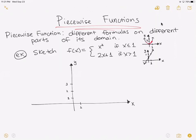So we're going to take only the red part of the graph. Not the entire graph, only from negative infinity to 1.